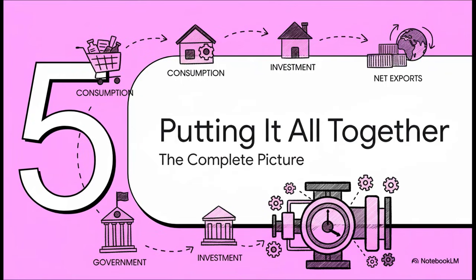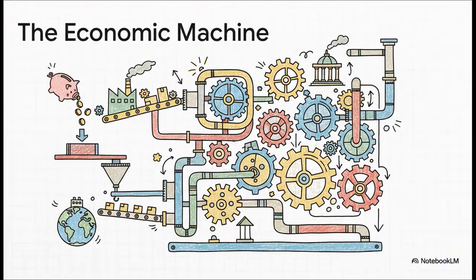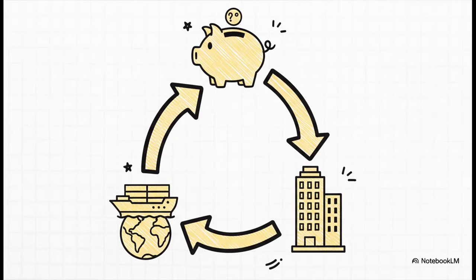We have officially laid out all the components on the table: the internal pieces — consumption, investment, and government spending — and now the external piece, net exports. Here is the whole economic machine. You can see how it's driven by the personal savings choices that you make, includes the strategic decisions companies make about their profits, is powered by investment that builds our future, is shaped by government spending, and is all connected to the rest of the planet through the constant flow of trade. The economy isn't some abstract, invisible force — it's a deeply interconnected system where a decision made in a boardroom can affect your bank account, and where your choice to save a little extra money helps fuel the very investments that create the products we sell across the globe.